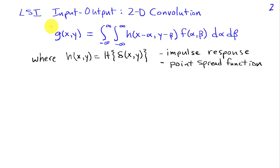Well, the input-output relationship for a linear shift-invariant system is just a two-dimensional convolution. The output G of X comma Y is just the double integral from minus infinity to infinity of H of X minus alpha comma Y minus beta times the input F of alpha comma beta d alpha d beta. So this is a two-dimensional extension of our familiar one-dimensional convolution, and H in this case is a two-dimensional impulse response of the system.